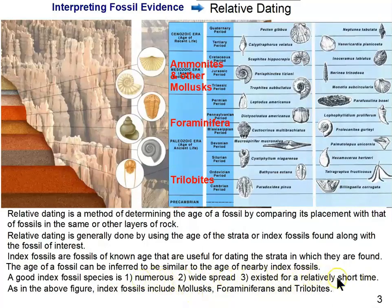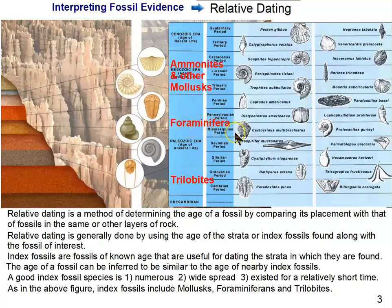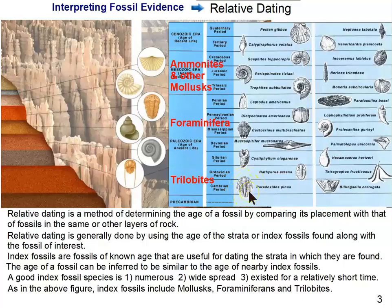Good index fossils have hard parts that fossilize really well. Mollusks fossilize well because of their shells. Foraminifera are microscopic amoebas that form calcium carbonate shells and are very good index fossils, used extensively despite needing a microscope to see them. Trilobites are famous and numerous; they fossilize well because they have an exoskeleton as arthropods. Many species existed over time, making trilobites excellent index fossils.